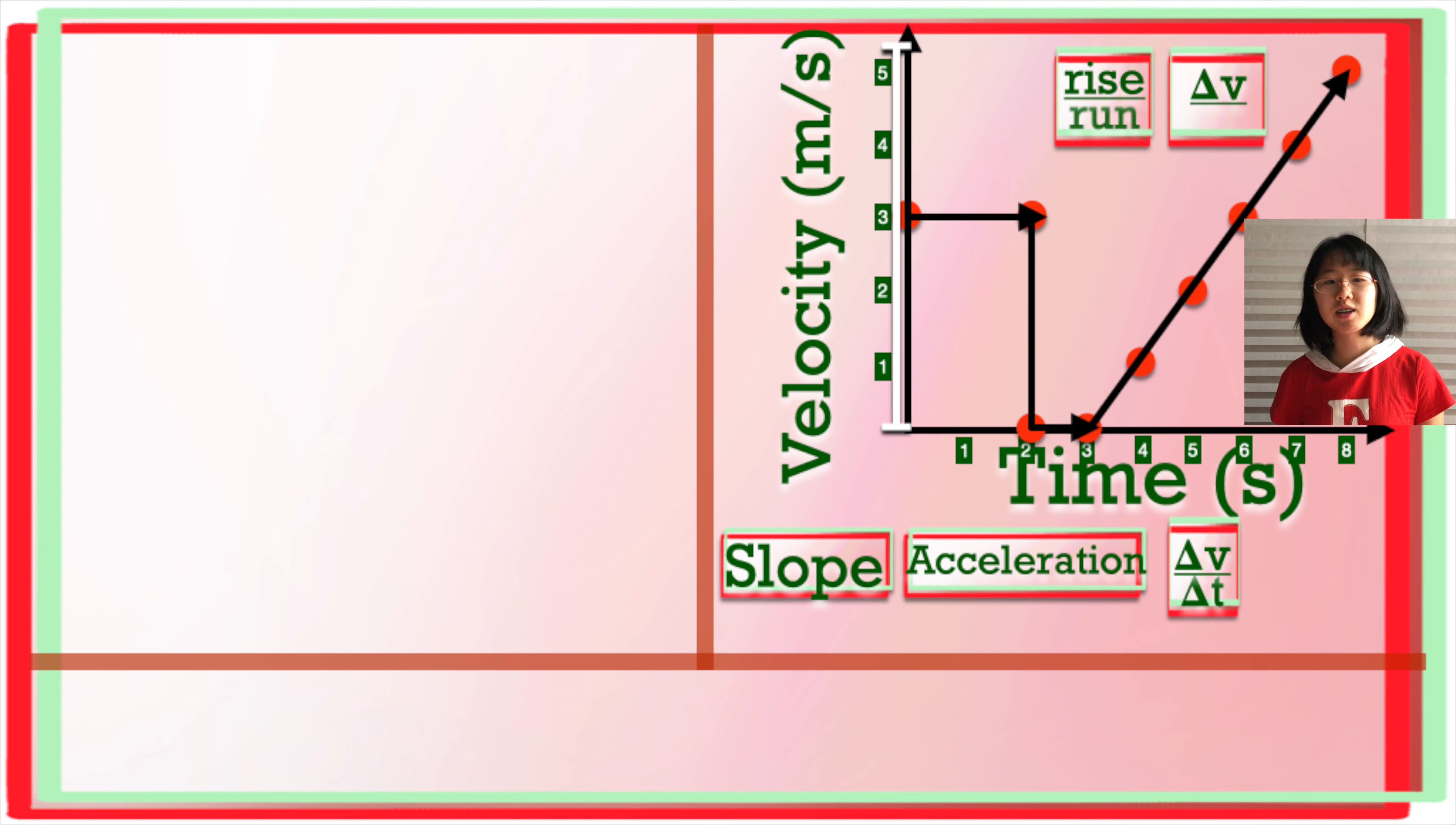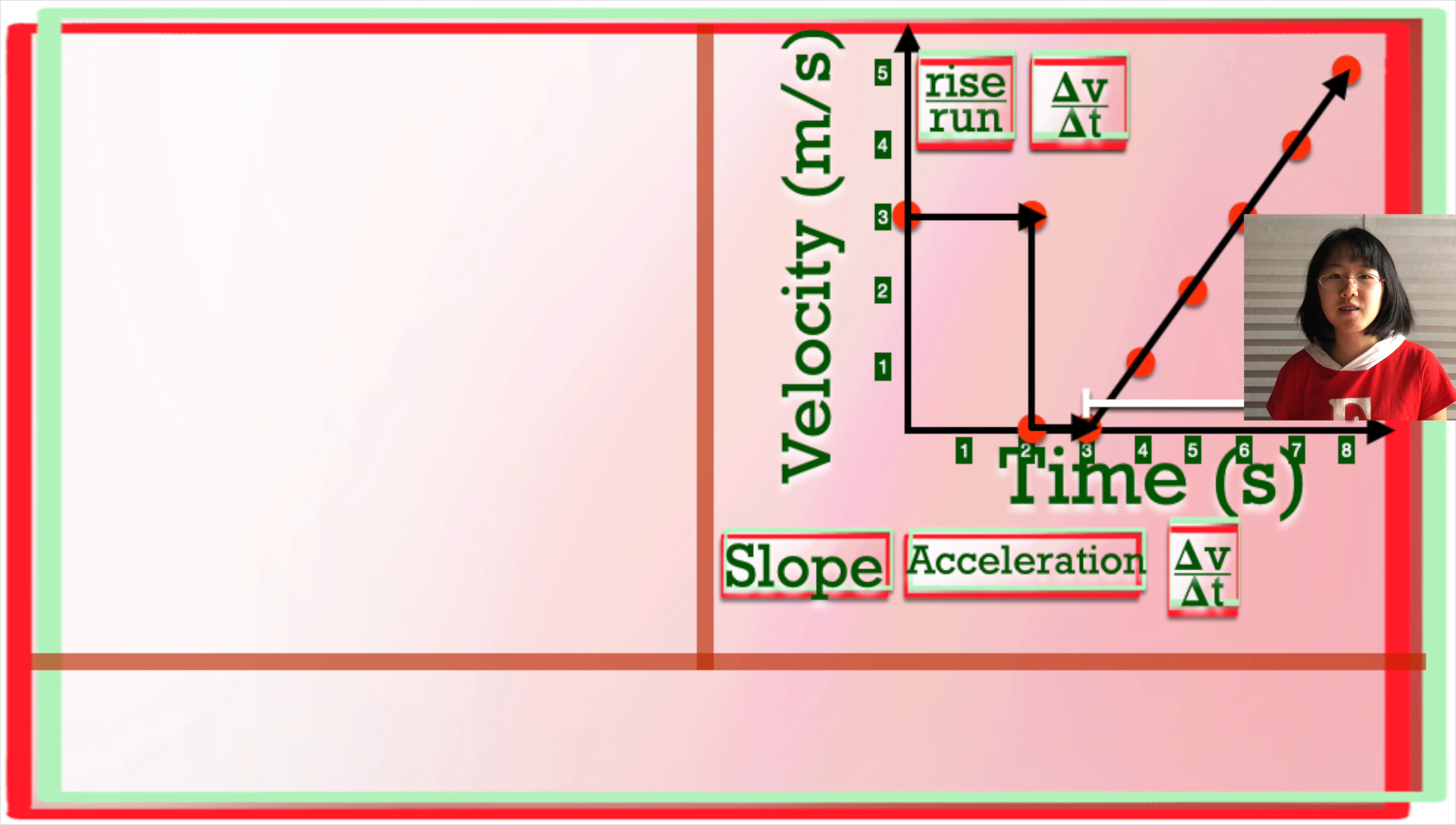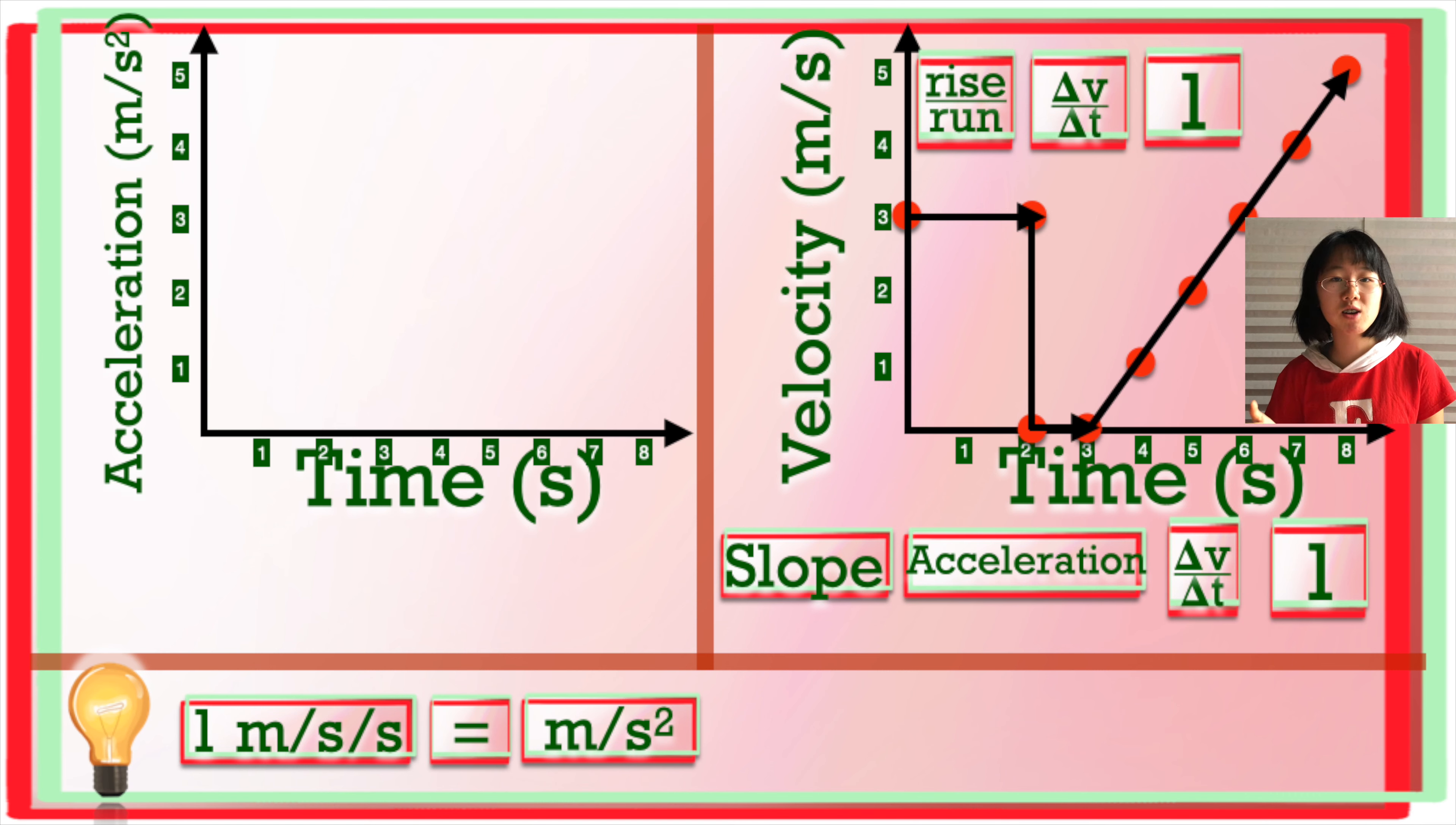Rise is change in velocity, and run is time, so finding the slope of our velocity time graph should give us our acceleration. Let's ignore all these flat lines where there isn't any acceleration happening. The rise or change in velocity is zero, so there's no acceleration. And look at the last 5 seconds of our graph. The slope is 1, so that's where our acceleration is. 1 meter per second of increase for every second, so our unit is meters per second squared. So we can graph that last part of your journey as constant acceleration at a rate of 1 meter per second squared.